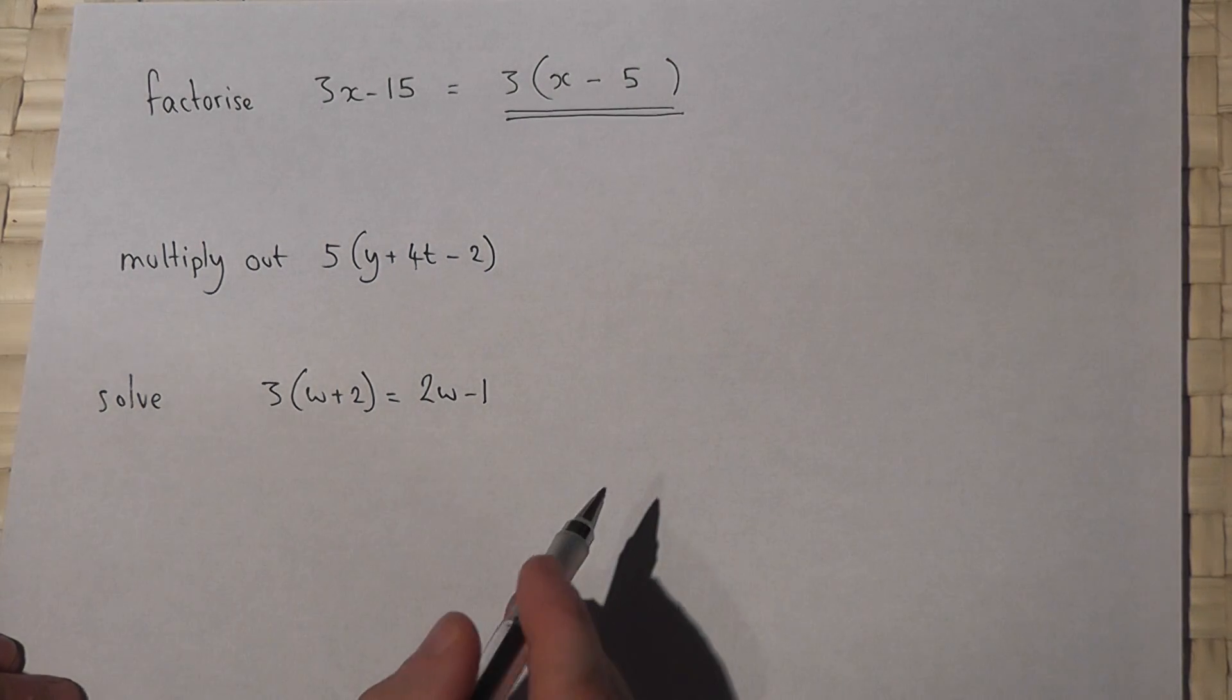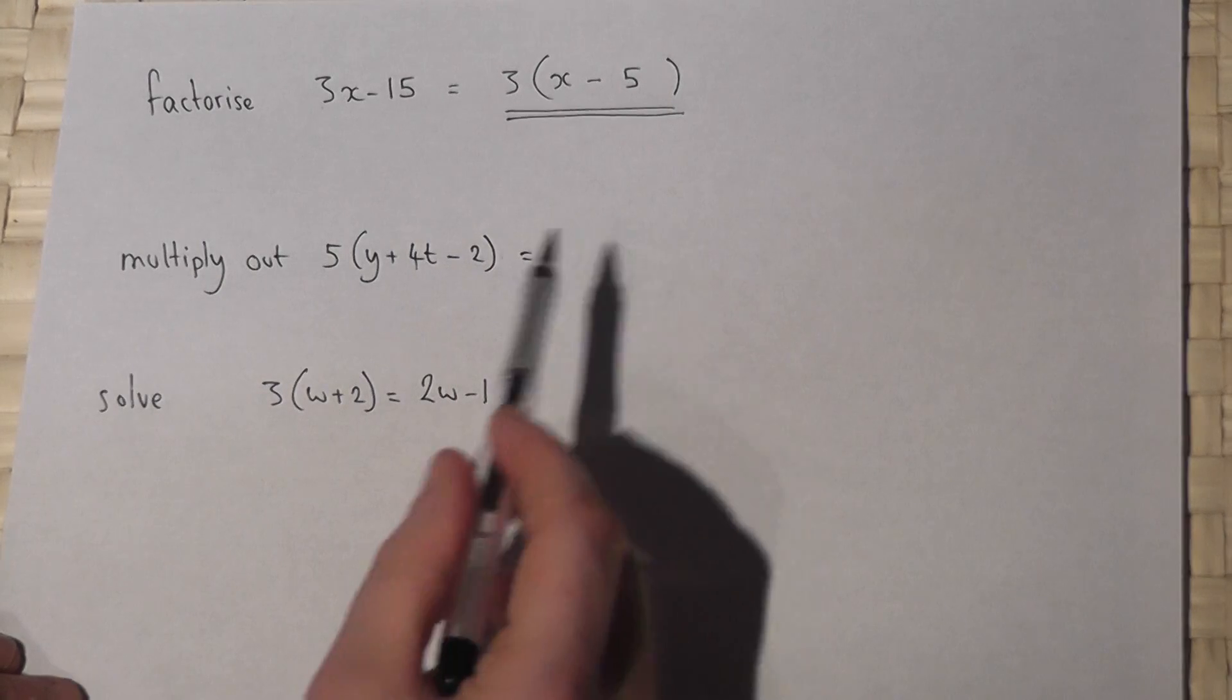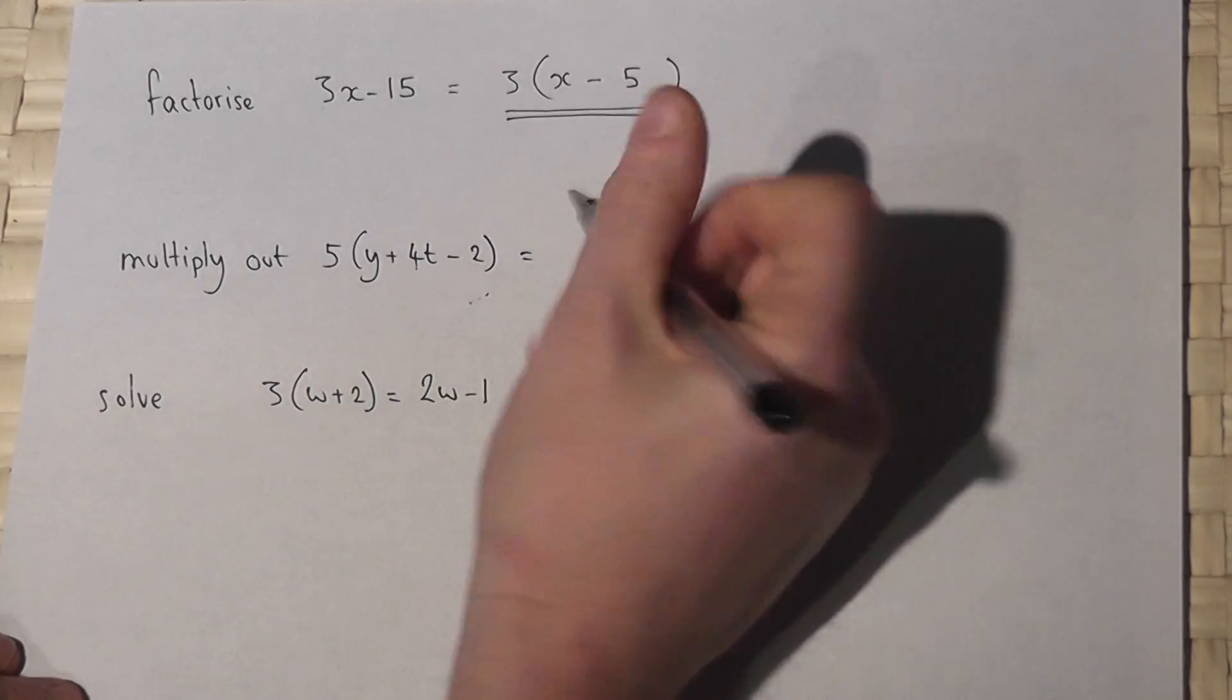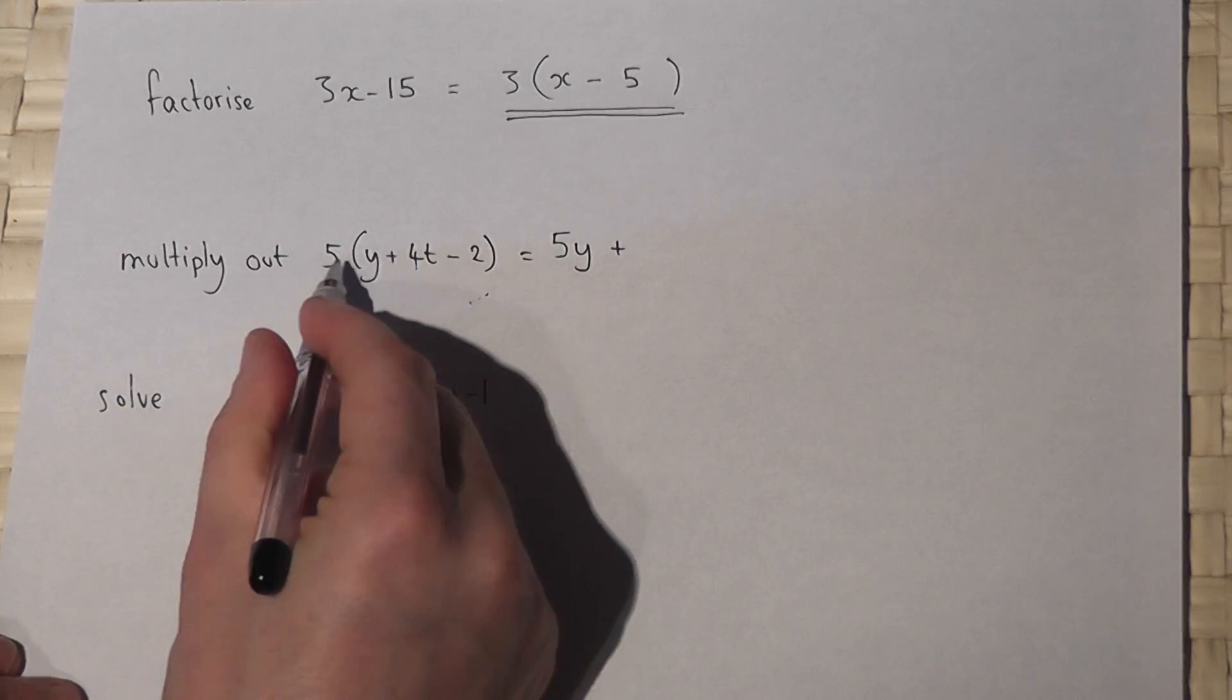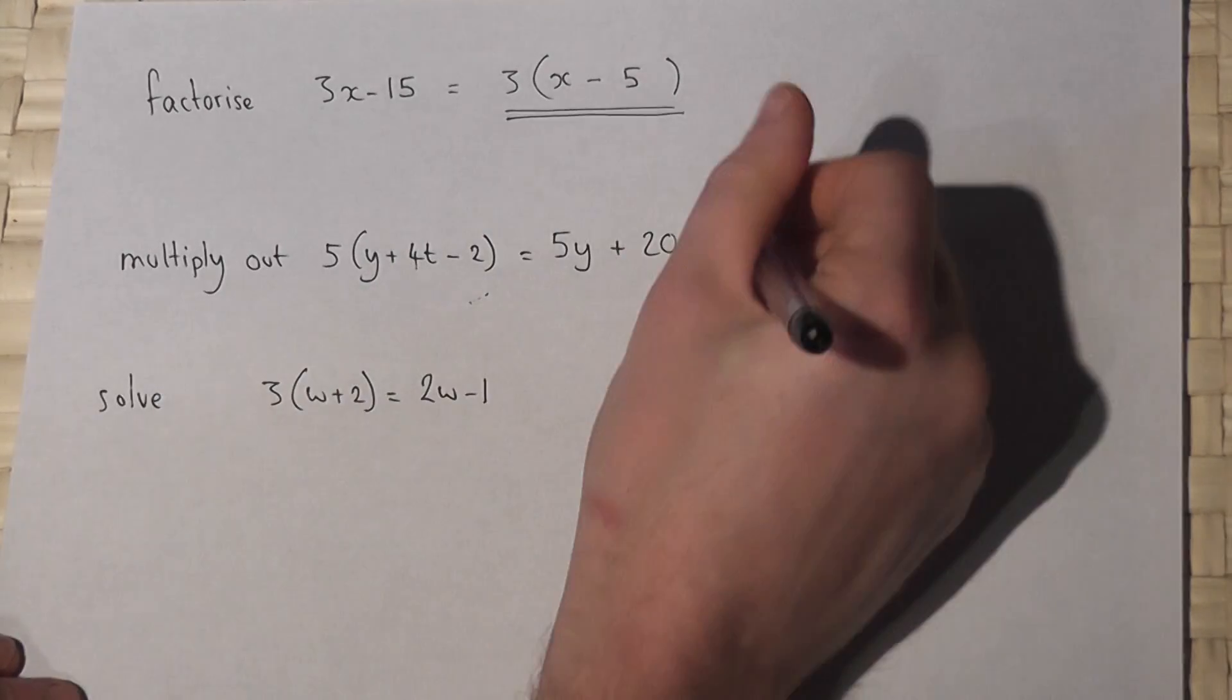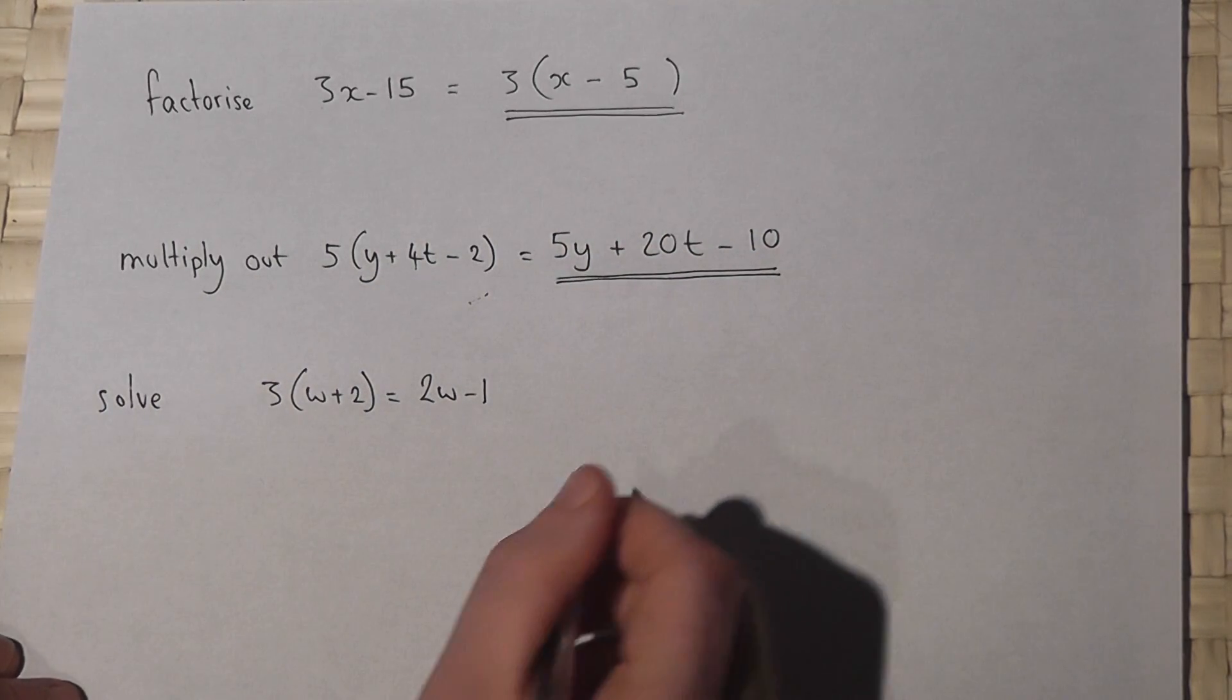Part two asks us to expand or multiply out a given expression. This just involves timesing all the terms in the bracket by 5. So 5 times y is 5y, 5 times 4t is 20t, minus 5 times 2 which is 10. So this expands to 5y plus 20t take away 10.